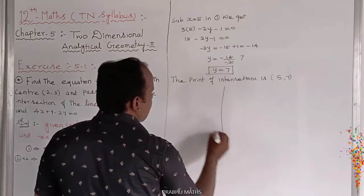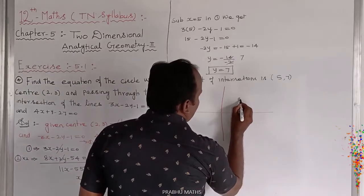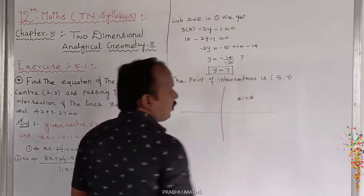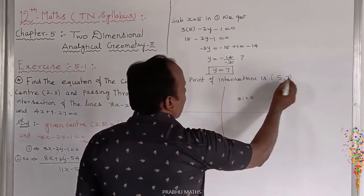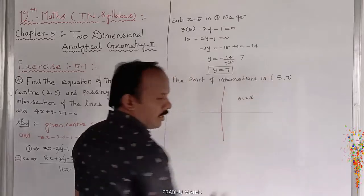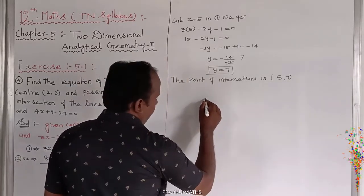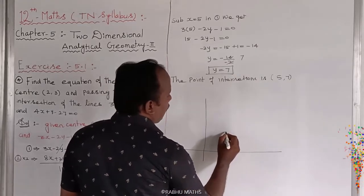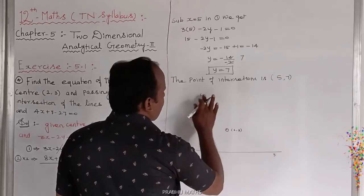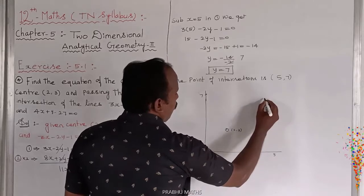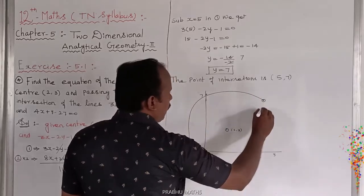Looking at the graph: center is at (2,3), which is a positive value. The circle passes through the point (5,7). Plotting approximately, center (2,3) and passing through point (5,7) — the circle has its center at (2,3) and passes through (5,7).